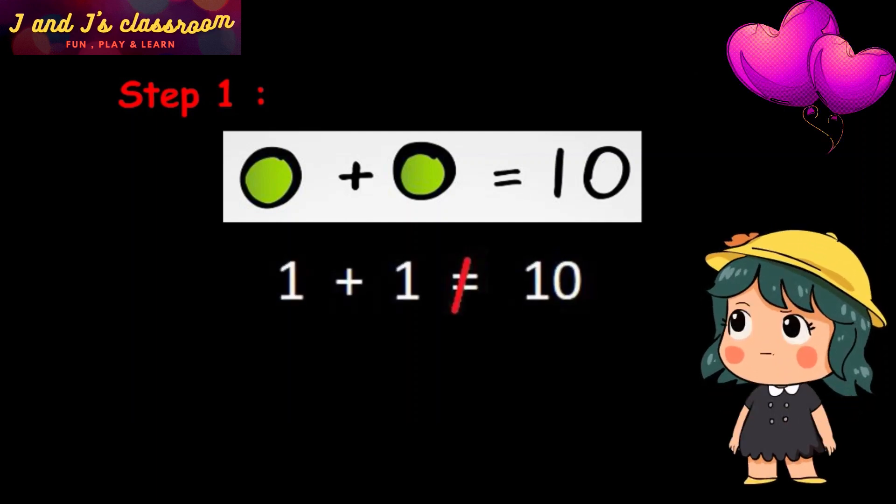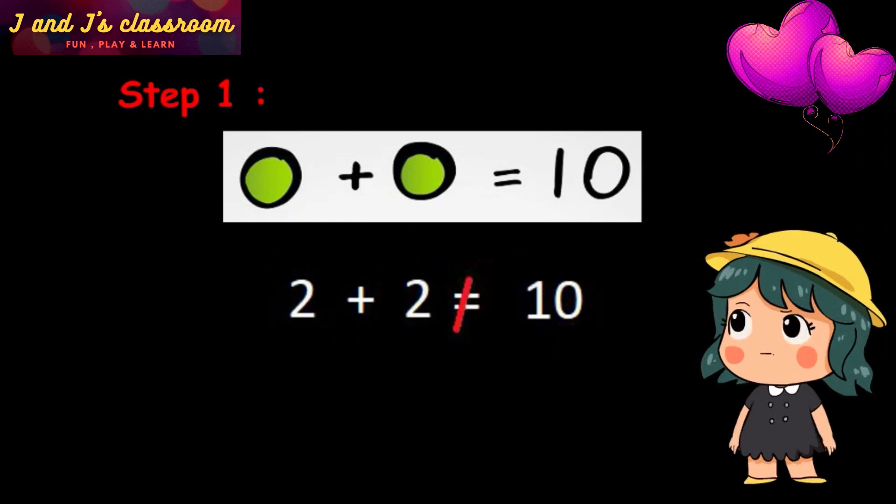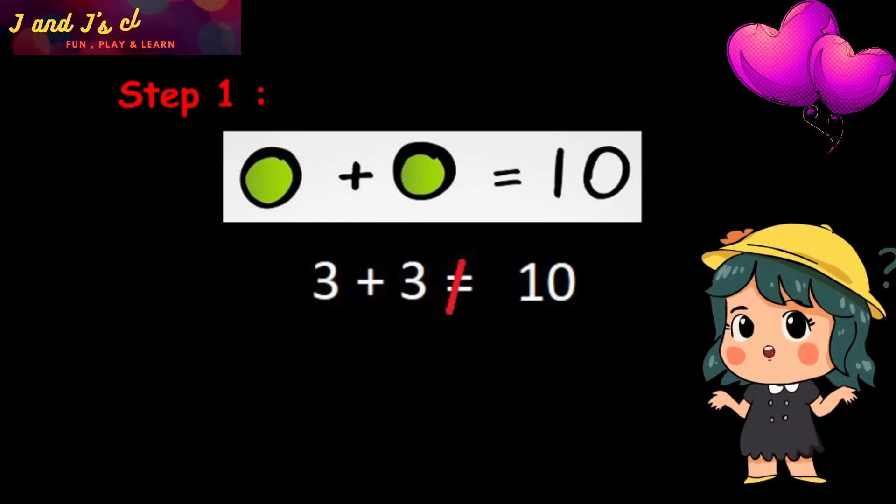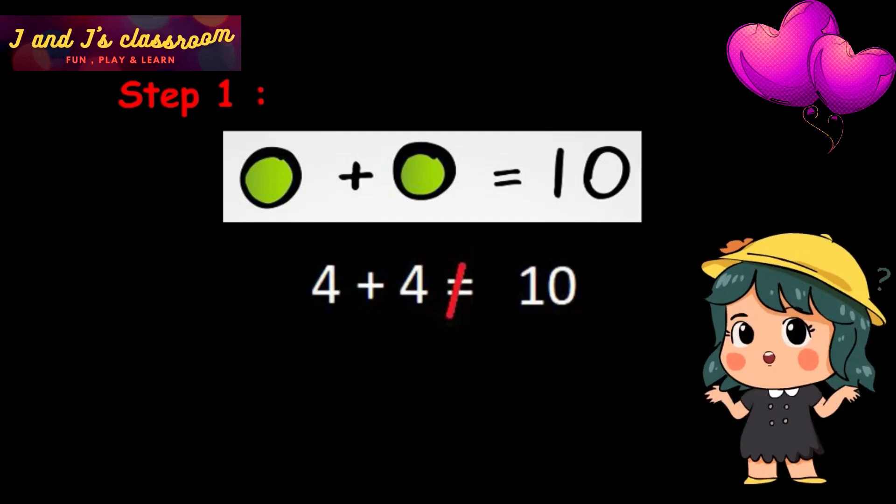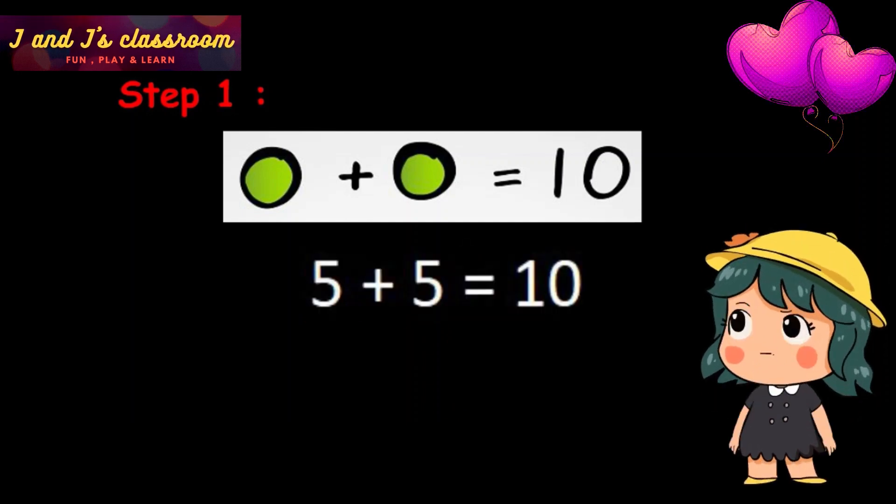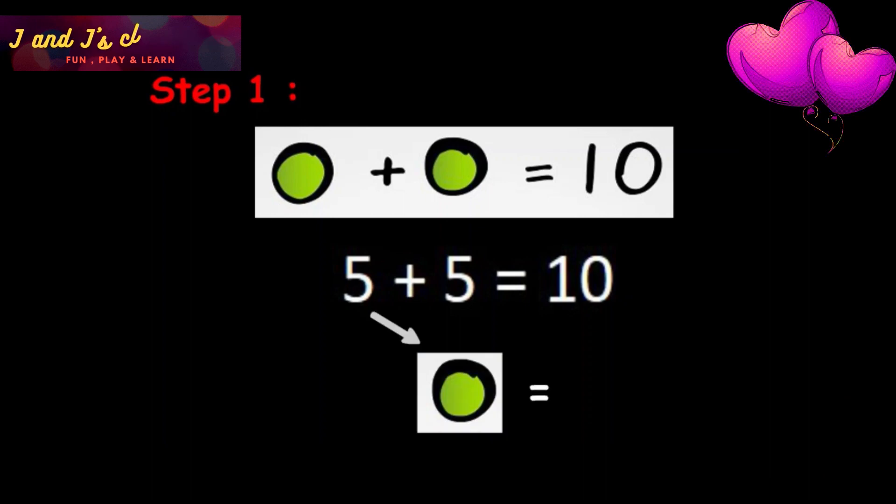1 plus 1? No. 2 plus 2? No. 3 plus 3? No. 4 plus 4? No. 5 plus 5? Yes. 5 plus 5 is 10. So the value of circle is 5.